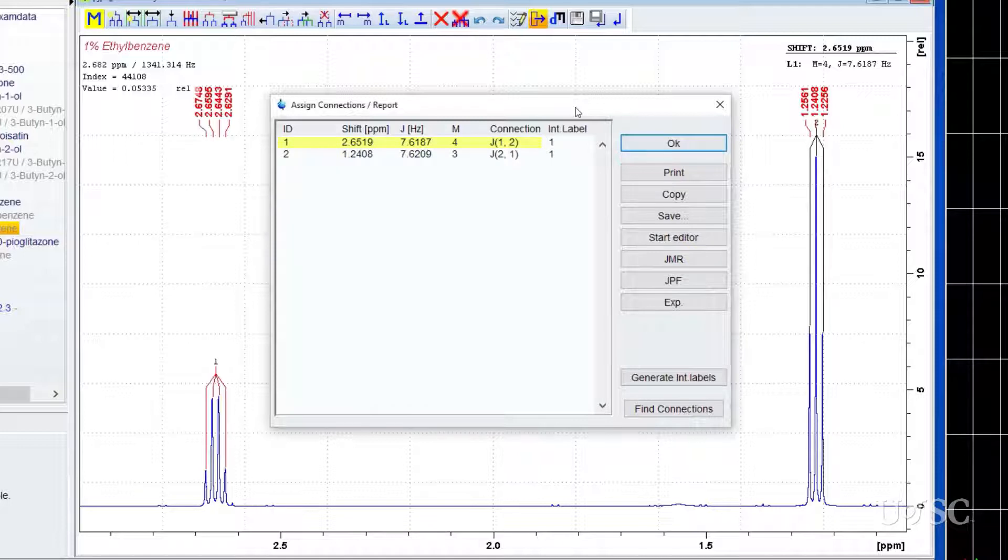In the case of multiplet 1, the methylene quartet, the coupling is to the proton labeled 2, the methyl triplet. Of course, the reverse is true for the methyl multiplet in the next row of the table. The last column is labeled integral label. This should show the relative number of each proton intensity. This value is usually wrong and it does not use the actual integrals you produced in Topspin. You can try to update this with the generate integral label button at the right, but this fails more often than it works with this version of the software. We will see this a little later.